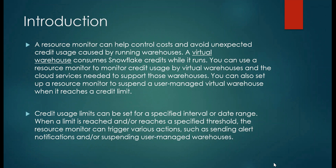This is similar to how Jio prepaid notifies you when you have consumed 50%, 80%, or 99% of your data, alerting you that only 10 MB or 100 MB is left and that you need to top up. Similarly, you can set a credit usage limit for a specific interval — daily, weekly, or monthly. Once a specific threshold is met, the resource monitor triggers various actions: it can send you an email or it can suspend that warehouse.